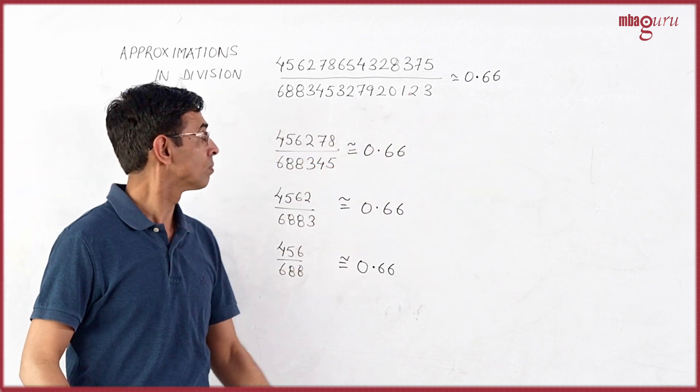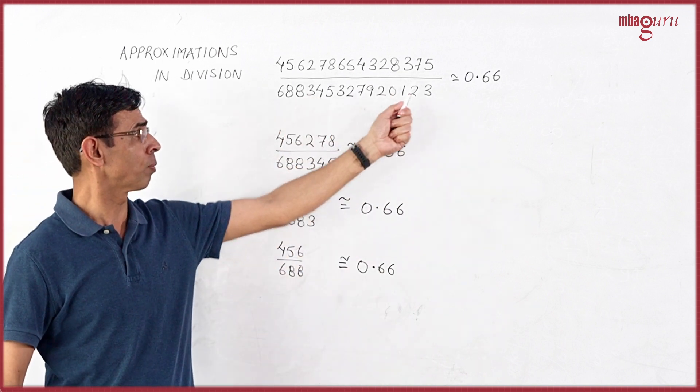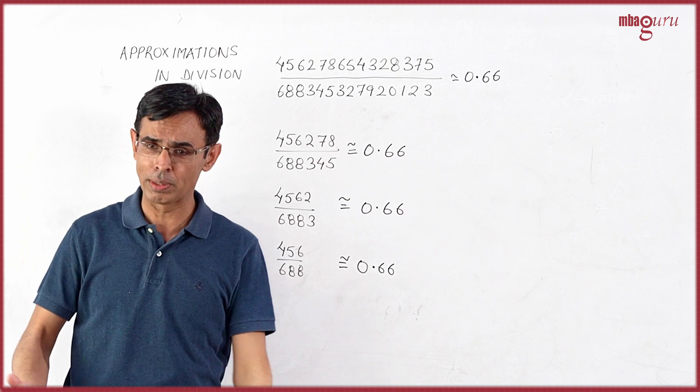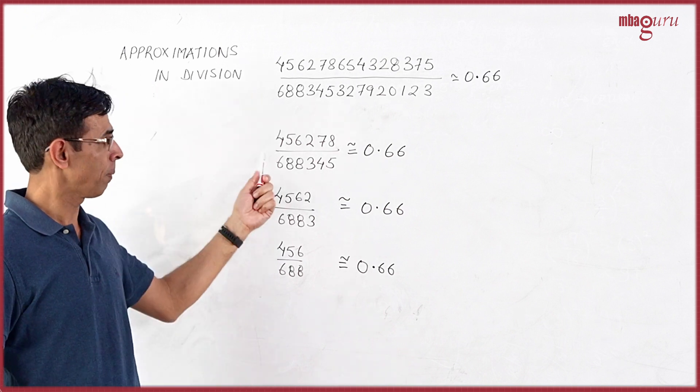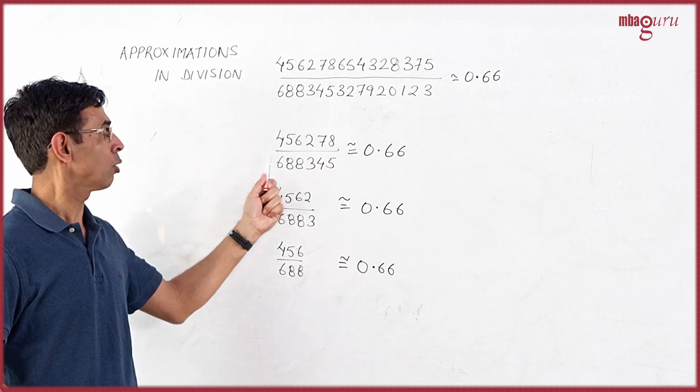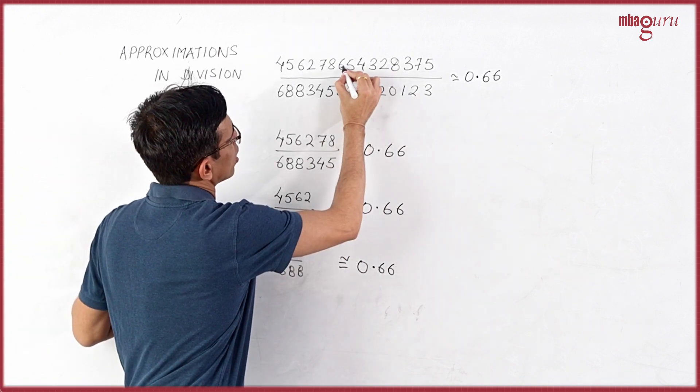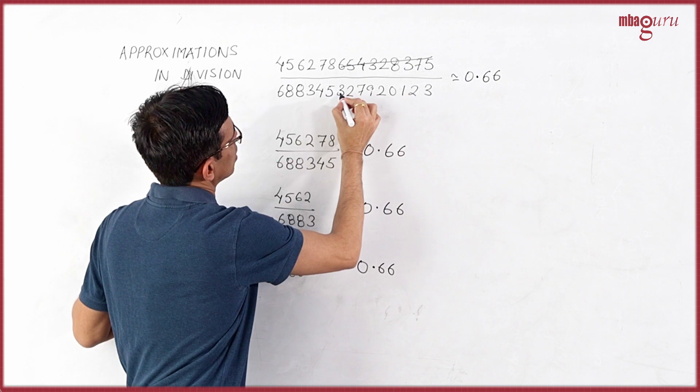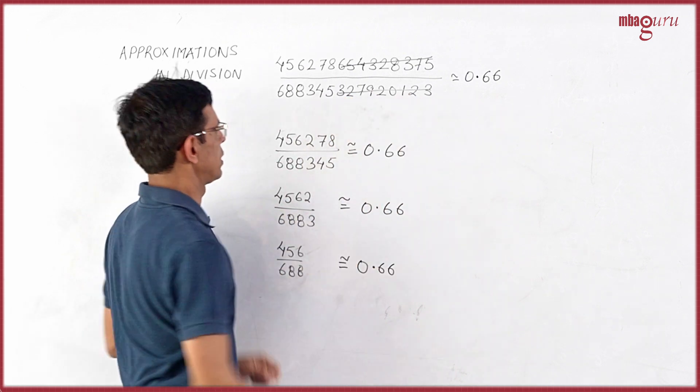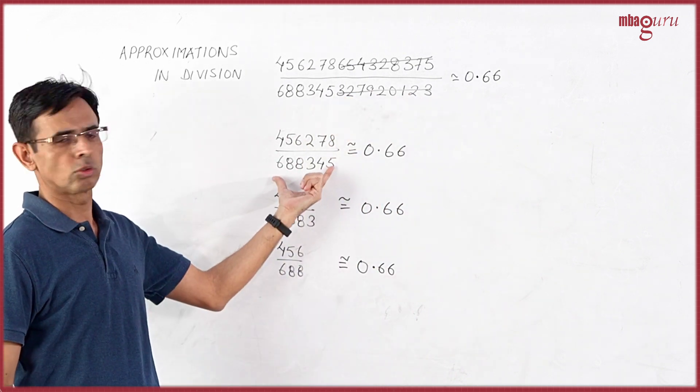Now, when you look at this expression, there are 15 digits in the numerator, 15 in the denominator. And what do I do here? I've simply removed these and these to get this expression.